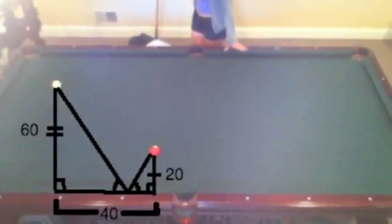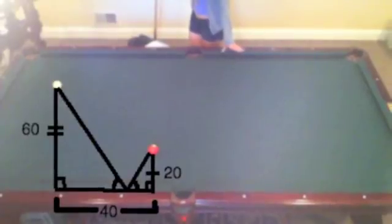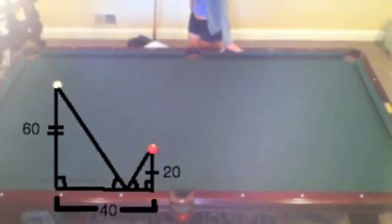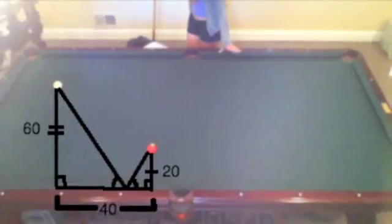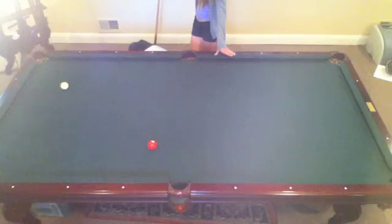In this particular situation, the cue ball is 60 units from the rail and the target ball is 20 units from the rail. The two right angles are 40 units apart. The ratio of the big triangle to the small triangle is 60 to 20, or 3 to 1. This means that 3 fourths of 40 is the length of the big triangle's leg and 1 fourth of 40 is the length of the small triangle's leg. Now you know exactly where to aim to accurately bank the ball.